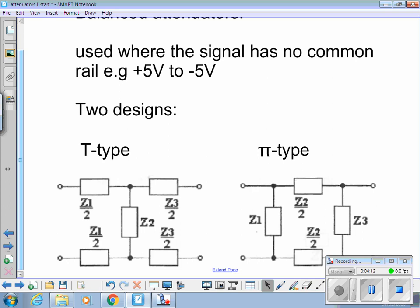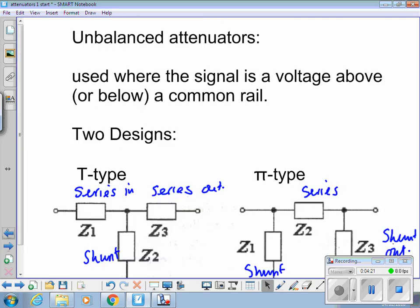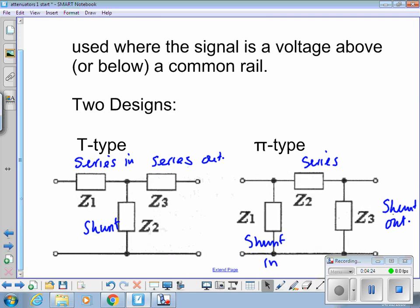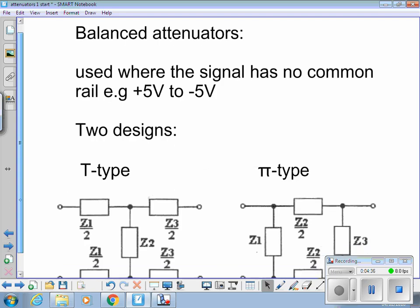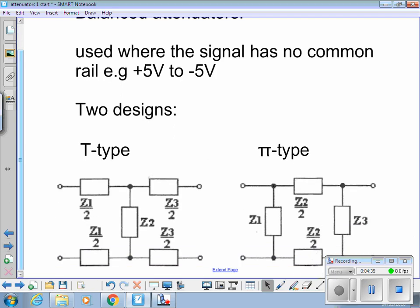Unbalanced attenuators. The other thing about the first one is it's where you're looking at a signal that is above or below a common rail. So you've got a 0 volt rail and a plus volts rail. If you've got a signal that is between plus 5 and minus 5 volts, we need to shift half the series impedance into the other rail. So what you do for that, and we're not designing these, this is included for completeness.